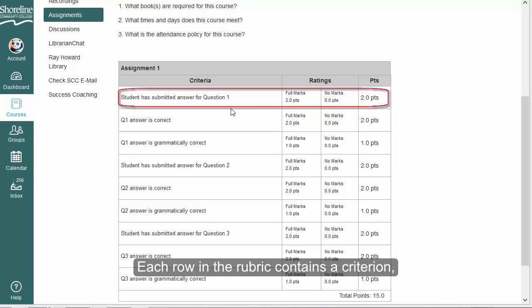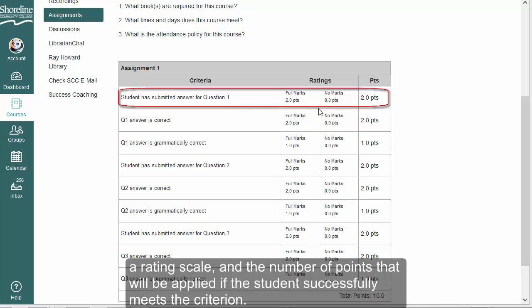Each row in the rubric contains a criterion, a rating scale, and the number of points that will be applied if the student successfully meets the criterion.